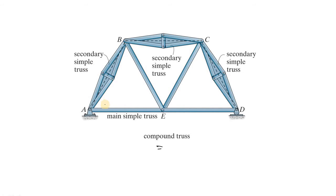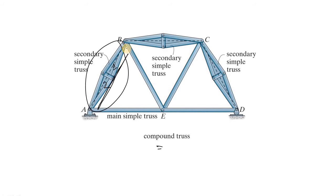Here you can see that this is a simple truss, because there are two triangles — triangle number one and triangle number two. These two triangles form the simple truss, and this simple truss forms an arm of this structure. So, maybe let's say this is a simple truss, and this is another simple truss.